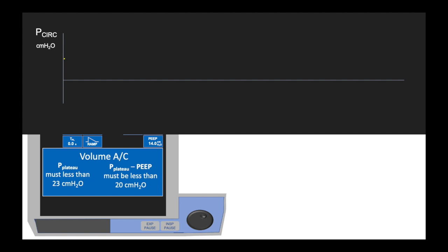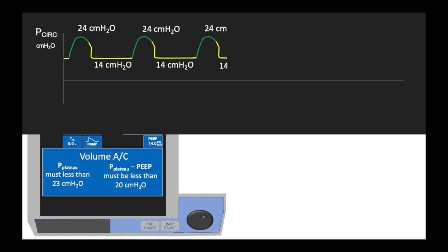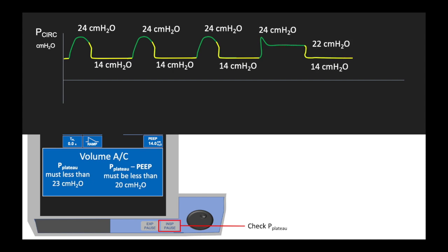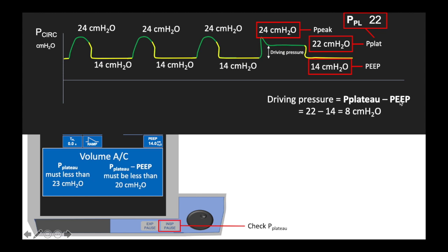Let's zoom in and look at the pressures on volume assist control in more detail. If you have a patient whose peak pressure is 24 and whose PEEP is 14, you don't know the plateau pressure until you perform an inspiratory pause. You perform an inspiratory pause by clicking this button right here, which gives a breath and then stops all flow so that the breath is held inside the patient's lungs. That gives you a plateau pressure — that's this flat part right here. So you have your peak pressure at 24 centimeters, the plateau pressure which is 22, displayed on screen as PEEP plateau, and this is the PEEP.